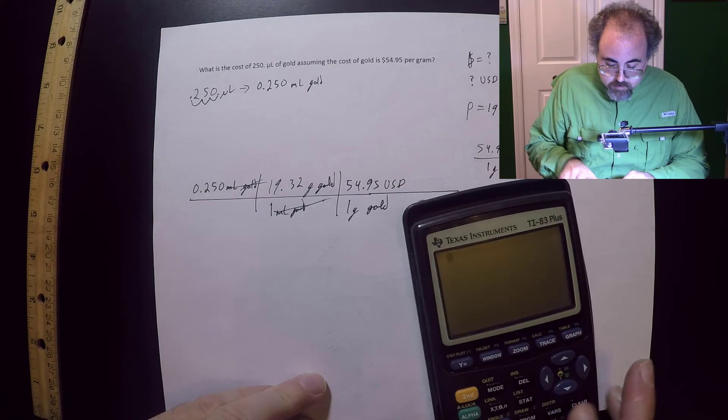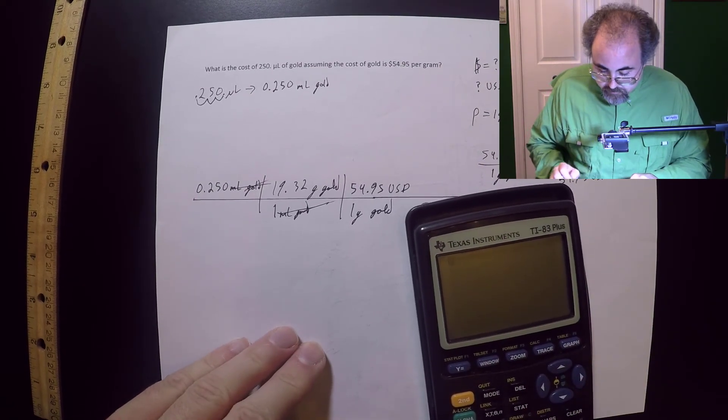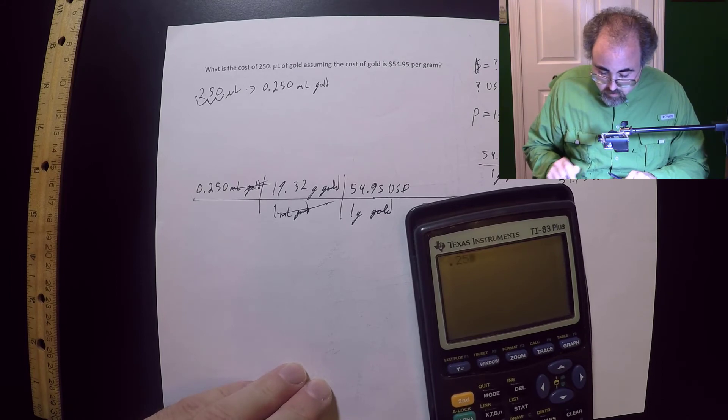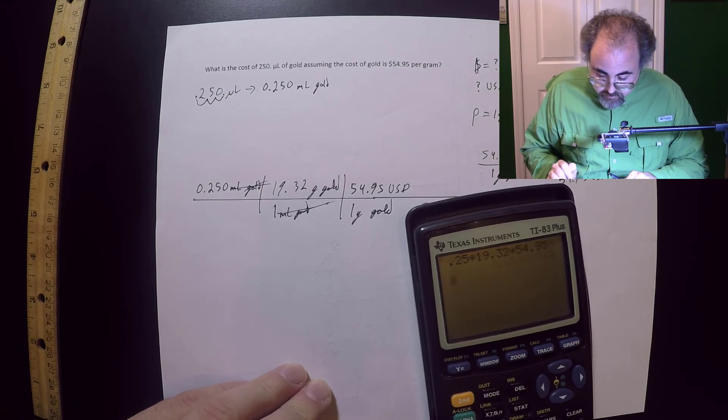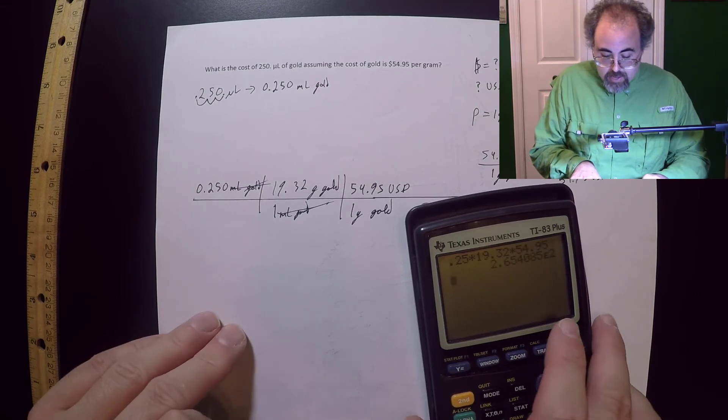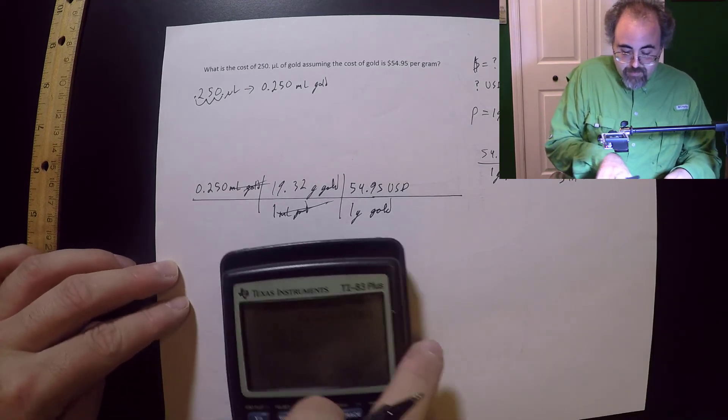I think there's a song like that. So $54.95 over one gram gold. So grab the calculating device. Put that back right. I'm going to take 0.025 times that by 19.23 times that by 54.95. And I get, ouch, gold is expensive.